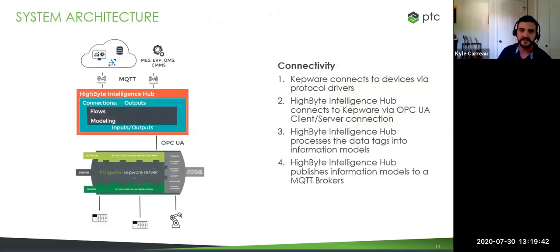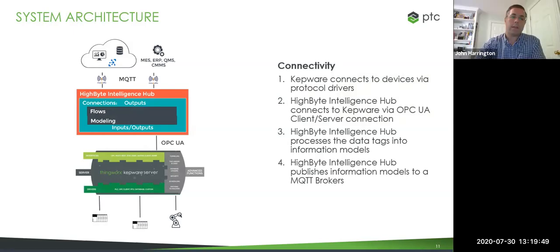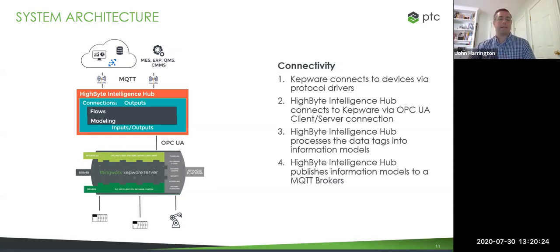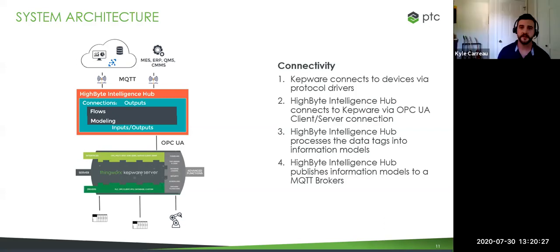Ideally you'd have a system architecture where Kepware collects the data just like it does today, and then the HiByte Intelligence Hub consumes the data over OPC-UA from Kepware. It then models and builds up the data flows — that's where you contextualize and structure the data — and then sends it out over MQTT so that when it lands in the cloud, it's very structured, standardized, and contextualized.